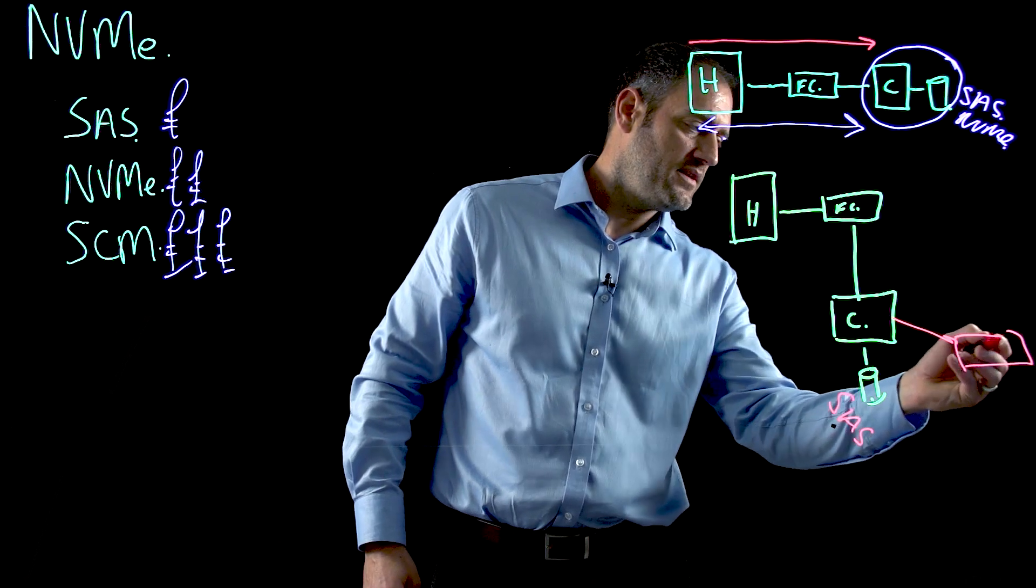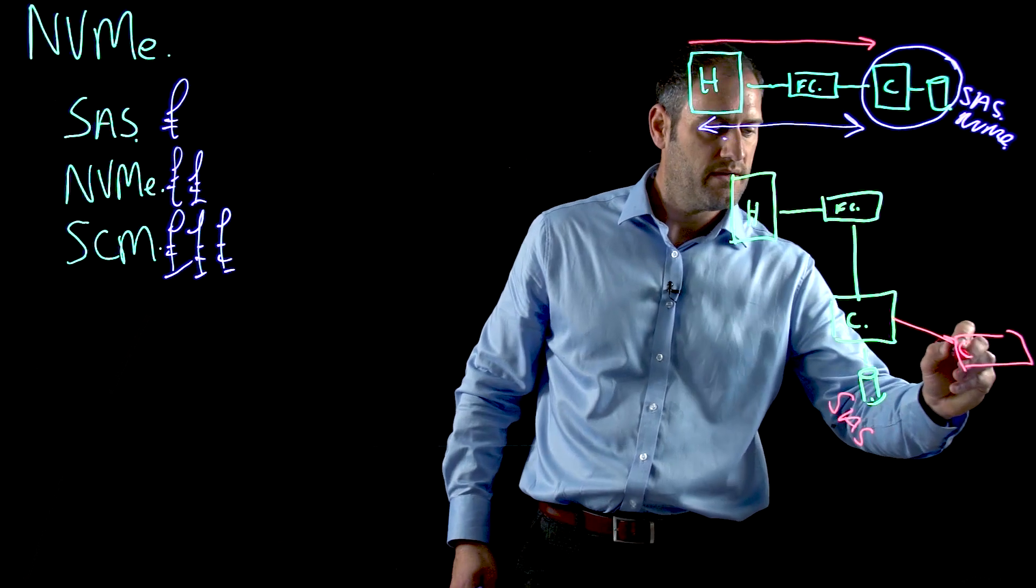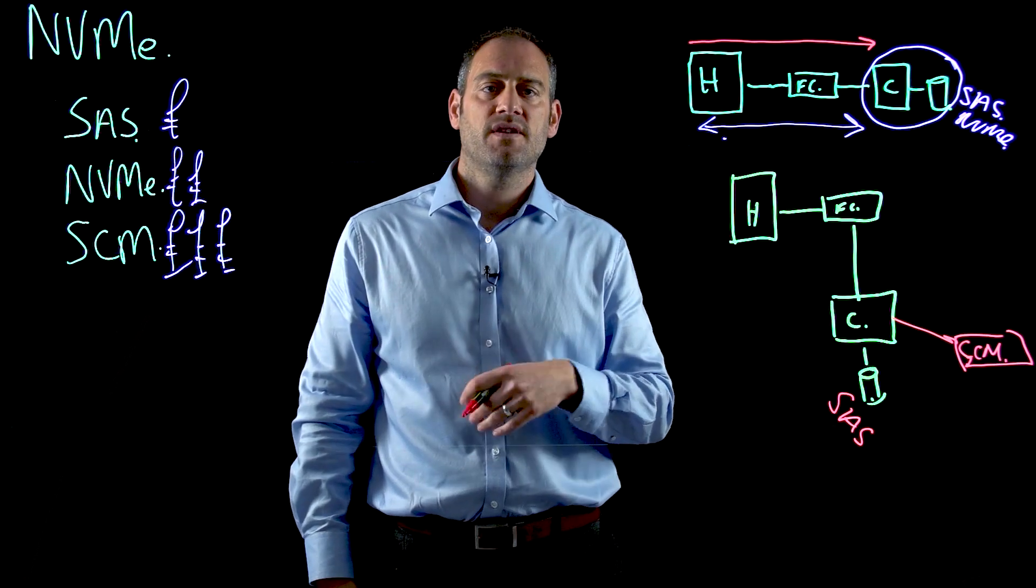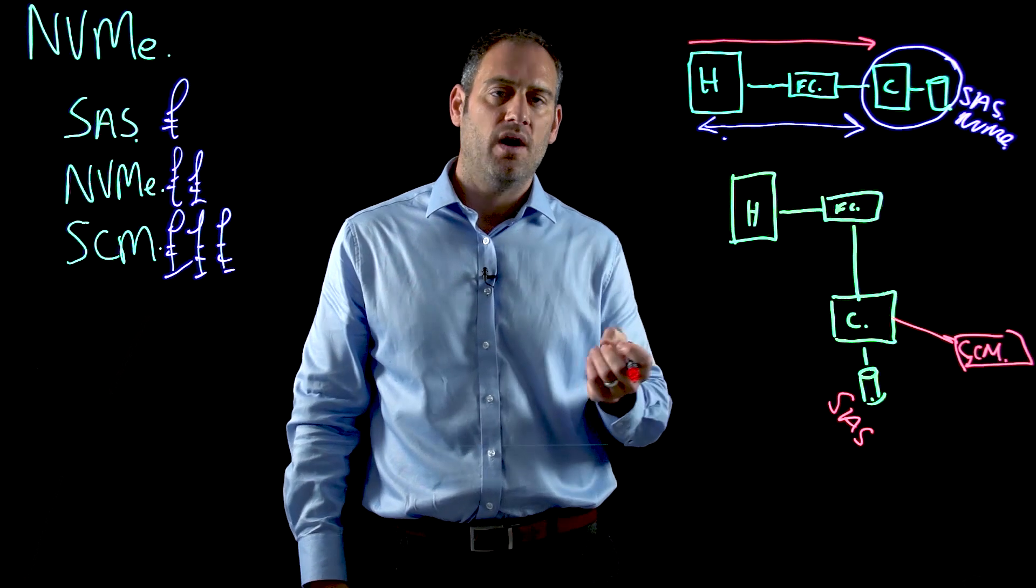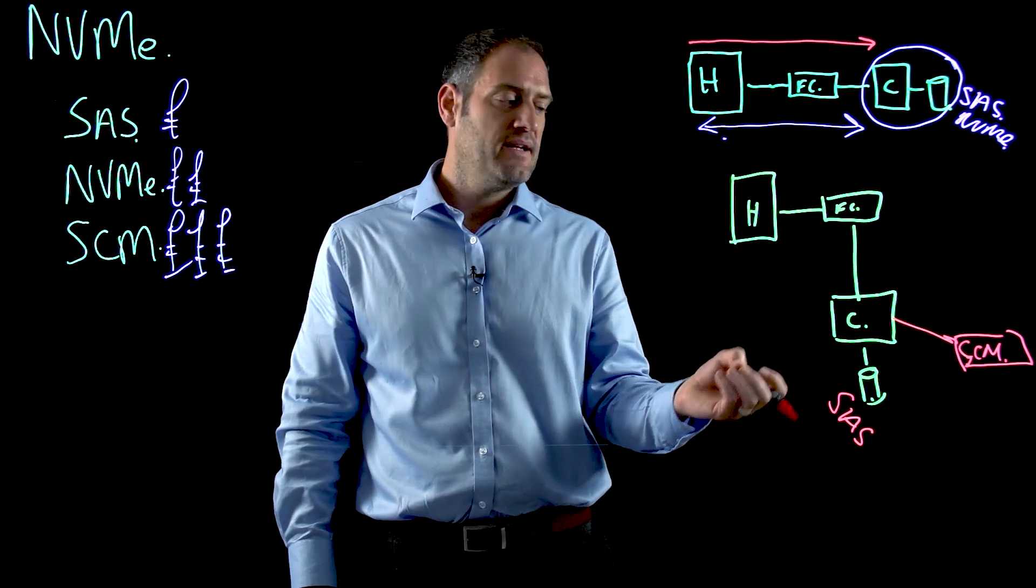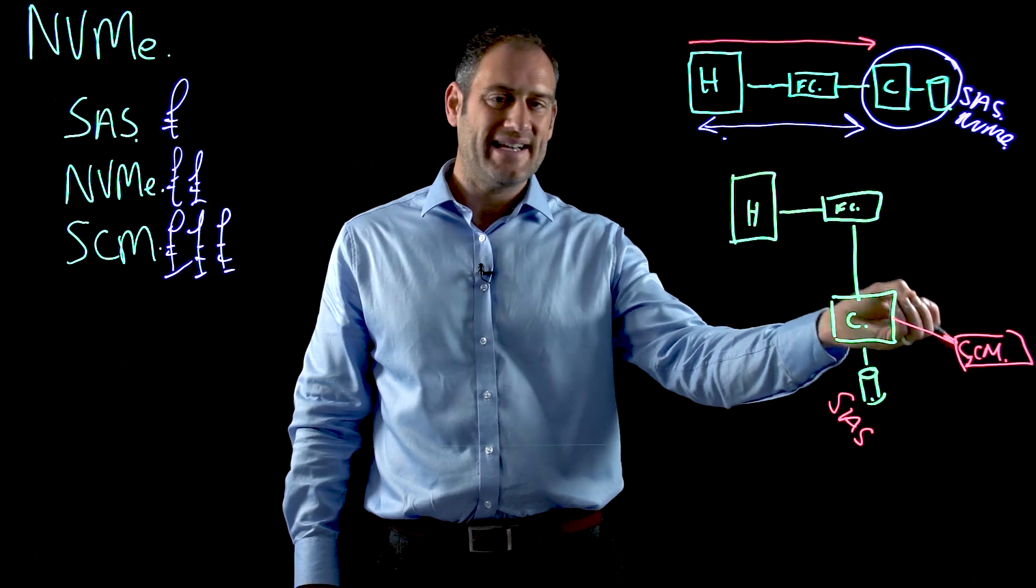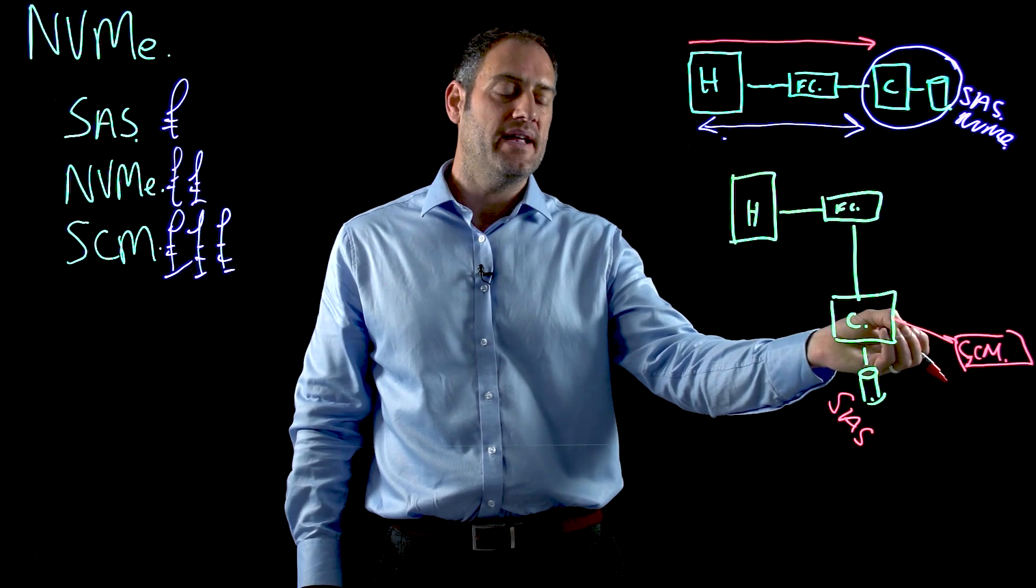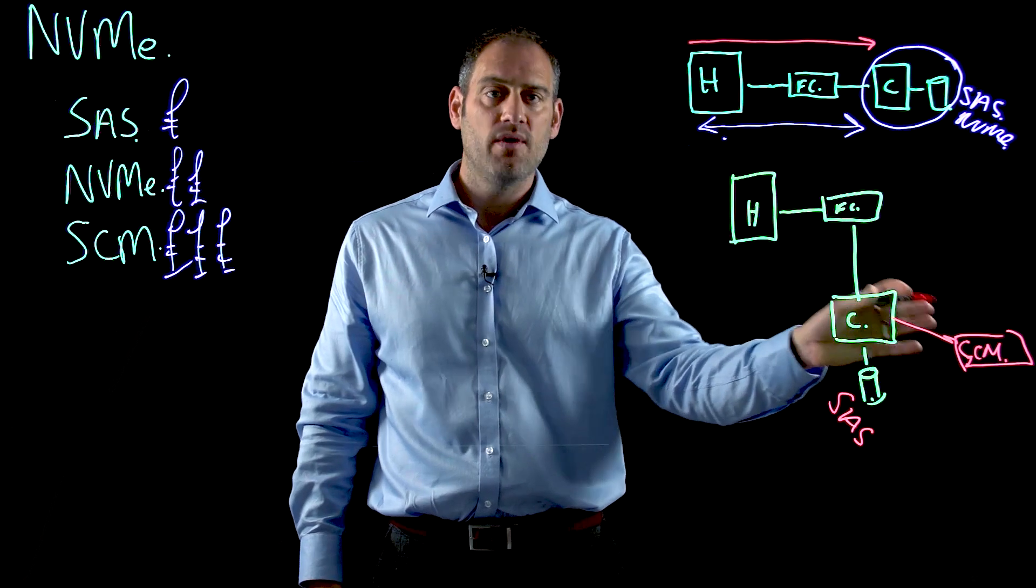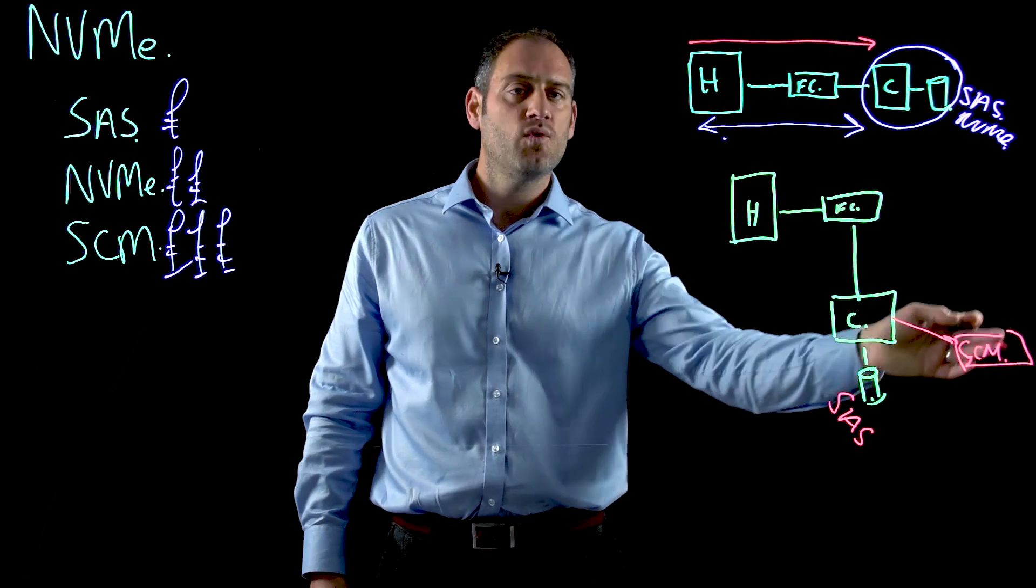So in here I can use my storage class memory and now I can use it as an advanced read cache. So the system is looking at what blocks are being required very frequently and we move that from the back end onto the controller node itself where it can be accessed extremely quickly over NVMe with a storage class memory device which has blisteringly low latency and I only need a small resource.